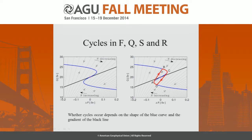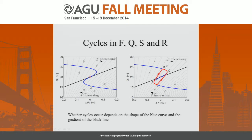The cycles work as follows: starting at point B with strong AMOC, high runoff causes Arctic salinity to decrease along this line until it can go no further, then it zooms down the constant-salinity line to the cold stage where AMOC is weak. With little runoff, Arctic salinity increases again due to freshwater starvation, returning to point A, and the cycle repeats. Whether cycles occur at all depends on the shape of the equilibrium curve and the gradient of the salinity line.